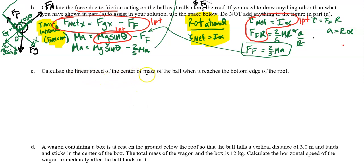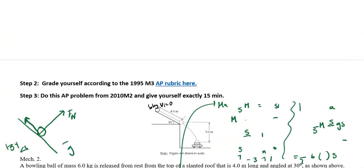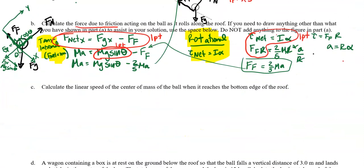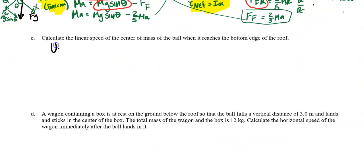Part C: we want to find the speed of the center of the ball when it reaches the bottom edge of the roof. The ball starts at the top and we want to find the speed at the bottom. Anytime you're changing heights and speeds, I love using conservation of energy.